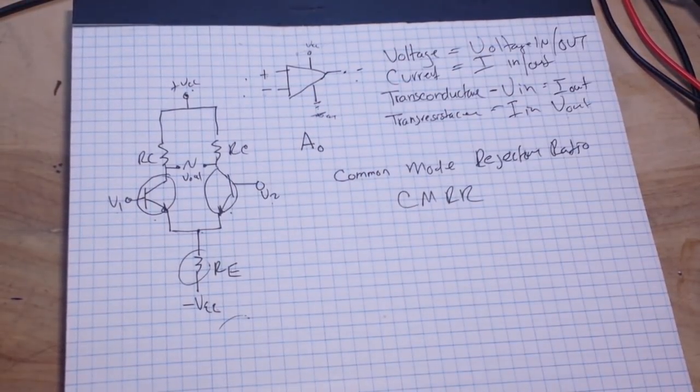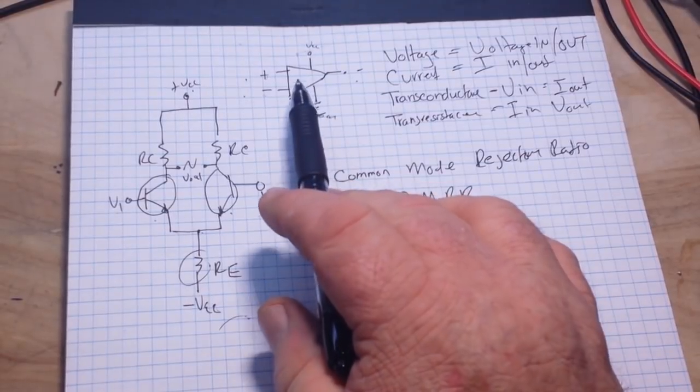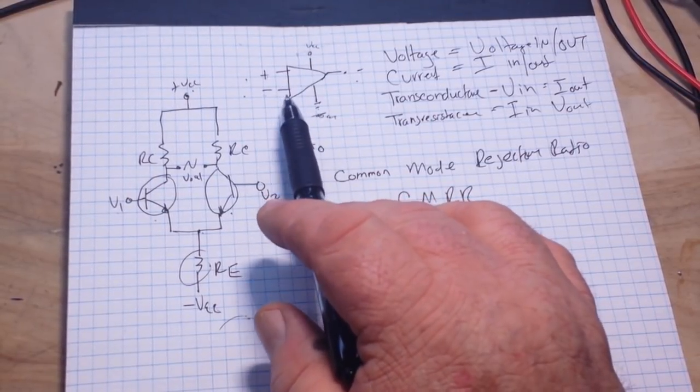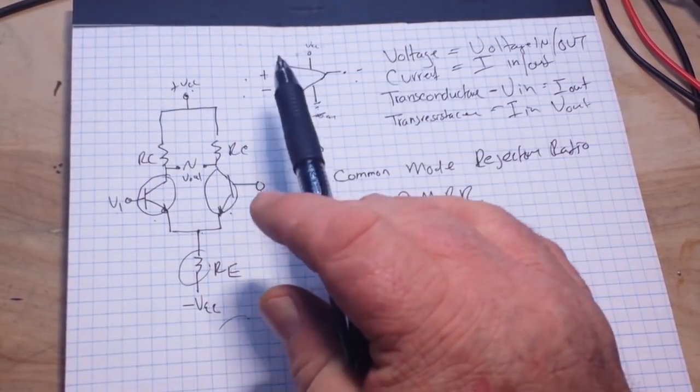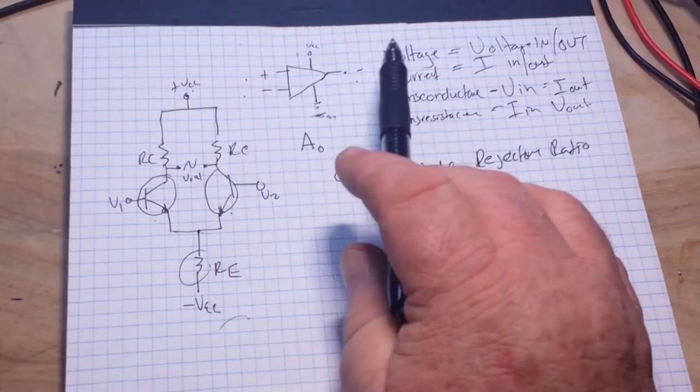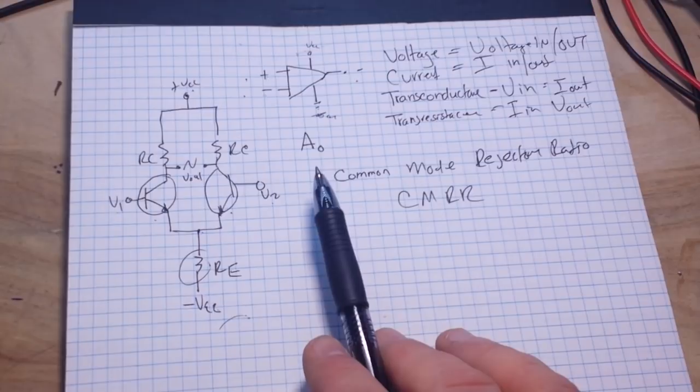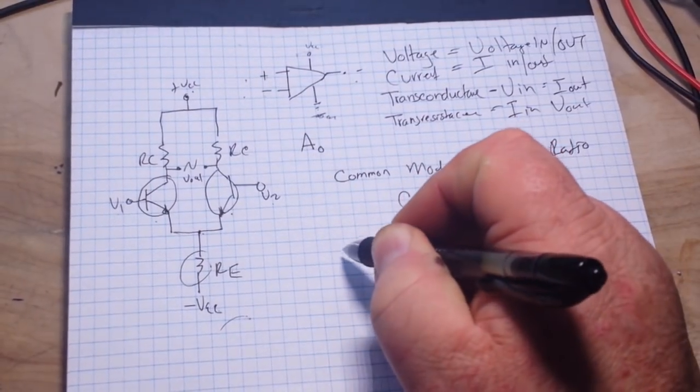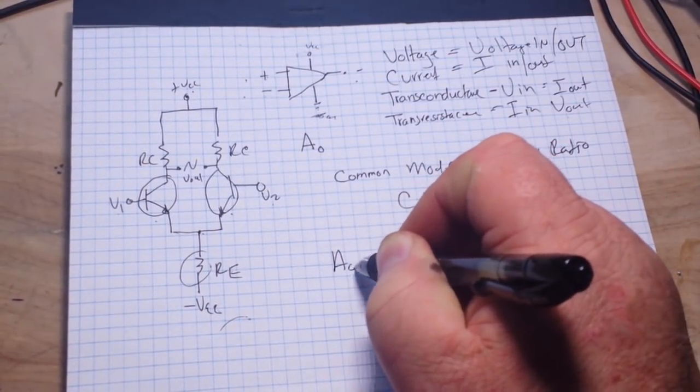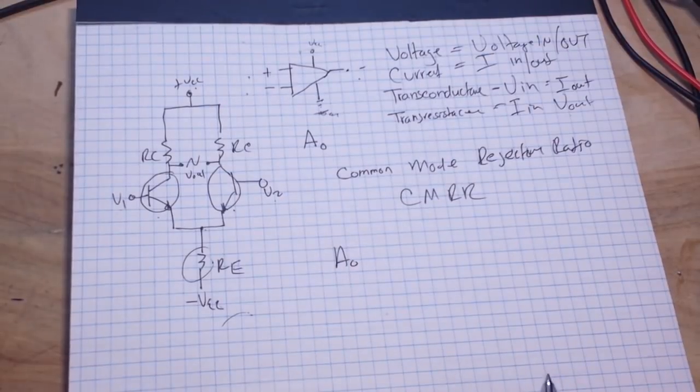That is known as the open loop differential gain, and it's usually referred to as A0. And most op amps you're going to deal with, like let's just talk about the 741, the most common - it's going to have an incredibly high open loop gain, almost to infinity, almost.